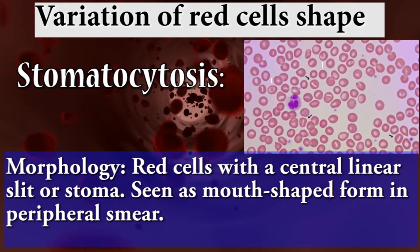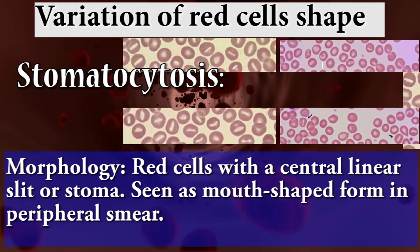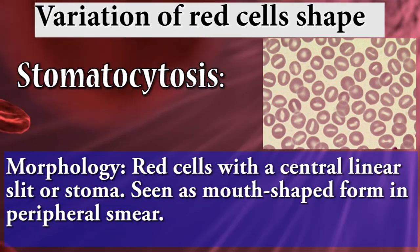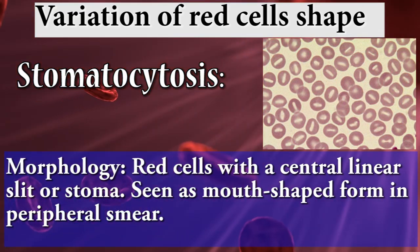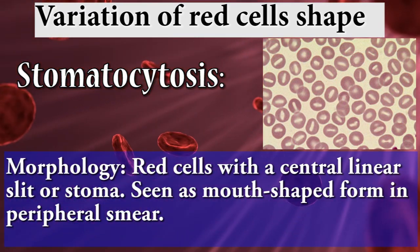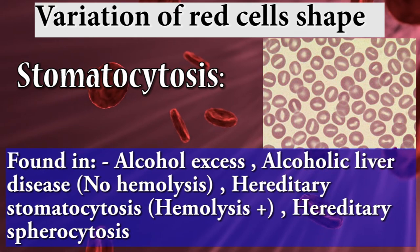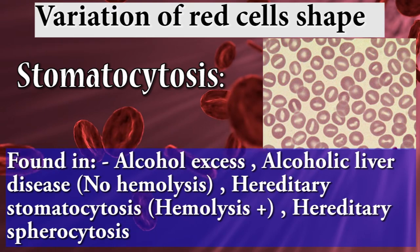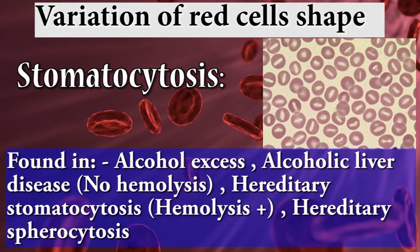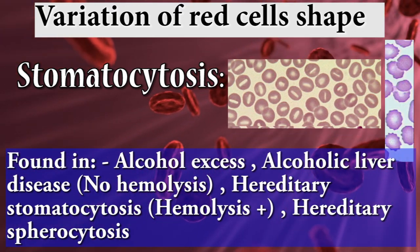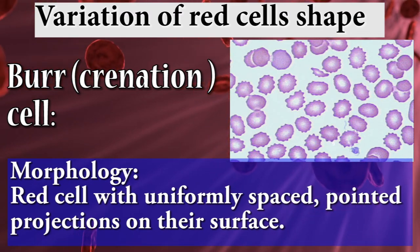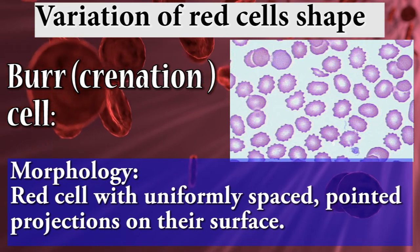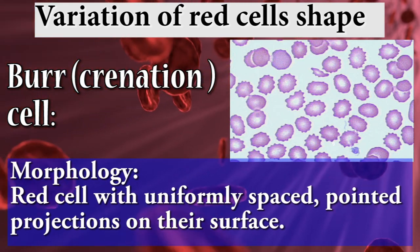Next is stomatocytosis: red cells with a central linear slit or stoma, seen as a mouth shape on peripheral smear. Found in alcohol excess, alcoholic liver disease, hereditary stomatocytosis, and hereditary spherocytosis. Burr cells have uniformly spaced pointed projections on their surface.